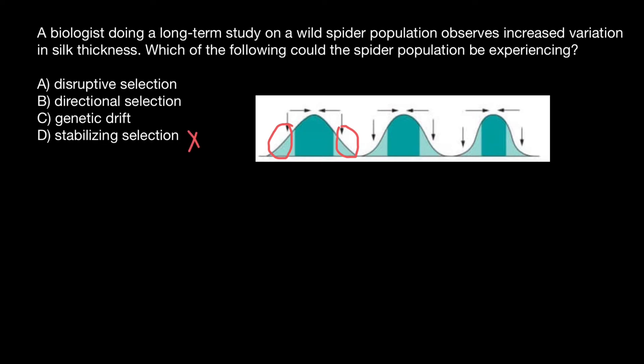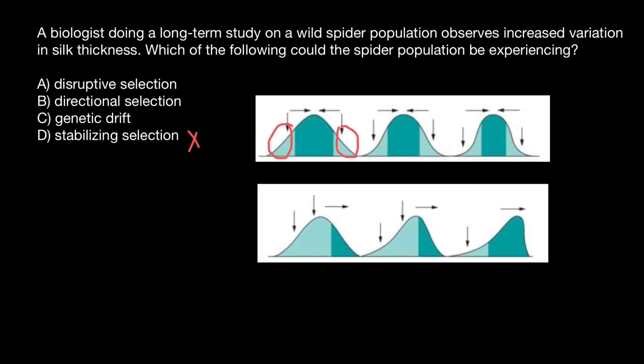Let's move to answer C, genetic drift. This picture is a good representation of genetic drift. Again, we start with the population just like here, phenotypes are distributed as a bell curve with few which are extremely small, few which are extremely large. And most would be found around the mean of the population.